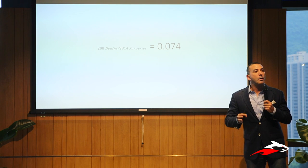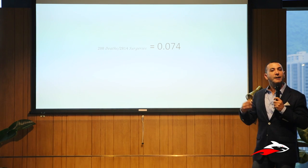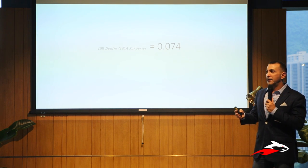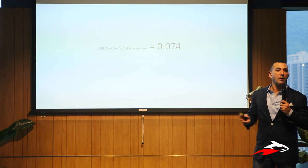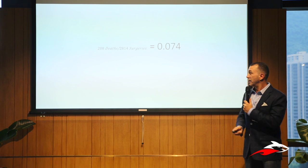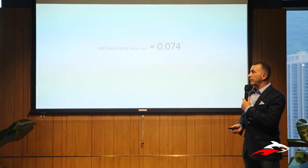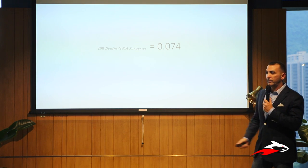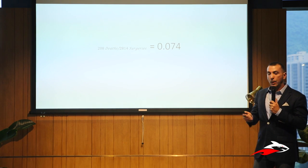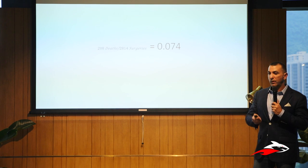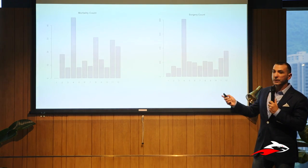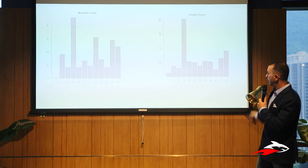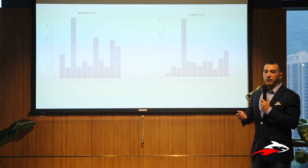Here's a quick demonstration using a classic dataset used in school, looking at infant mortality across hospitals in a region in the U.S. There were 2,814 surgeries and 208 deaths — around 7.5%. But we can do better. There are 12 hospitals, so the first thing people did was look at how many deaths and surgeries each hospital had and compute percentages.